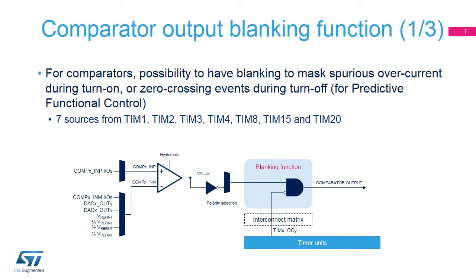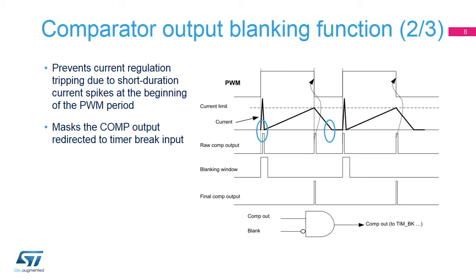The blanking function aims to mask the comparator output during periods of time indicated by a timer. This is typically used in the PFC (predictive functional control) technique. The comparator output value is ignored when the timer TIMX_OCY signal is asserted. The comparator can be used in the cycle-by-cycle regulation loop for monitoring the peak value of the current flowing into the load. The blanking function prevents incorrect current regulation tripping due to short-duration current spikes at the beginning of the PWM period.